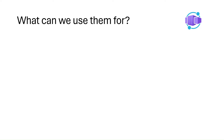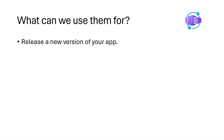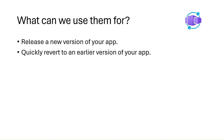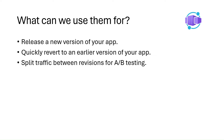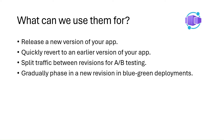Container app revisions help us manage the release of updates to our container app by creating a new revision each time you make a revision scope change. You can use revisions to release a new version of your application, quickly revert to an earlier version, split traffic between revisions for A-B testing, and gradually phase in a new revision using blue-green deployments.